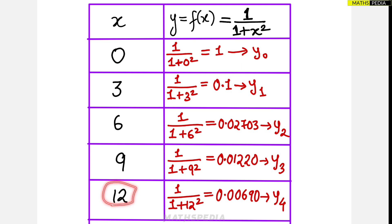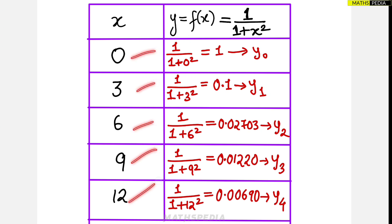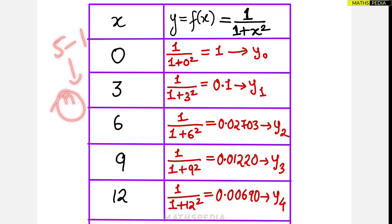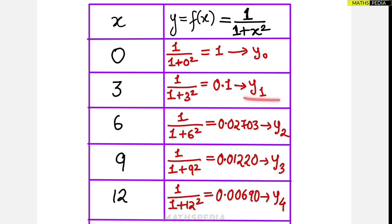You will arrive at the upper limit and can count the intervals: 1, 2, 3, 4 — confirming n equals 4 as required. There are 5 points total, also called ordinates in numerical integration. If you add 1 to the number of intervals, you get the number of points. Now form the second column by substituting each x value — 0, 3, 6, 9, 12 — into the function, giving y values named Y0, Y1, Y2, Y3, Y4.